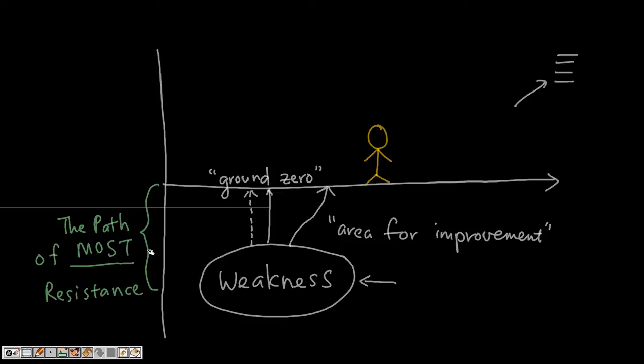This is what we call the path of most resistance. It takes a lot of effort to overcome your weakness to get back to ground zero.